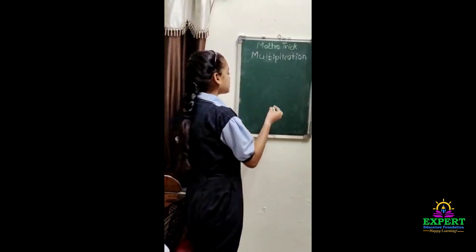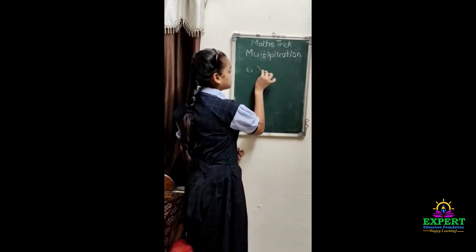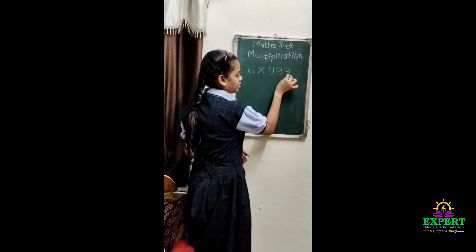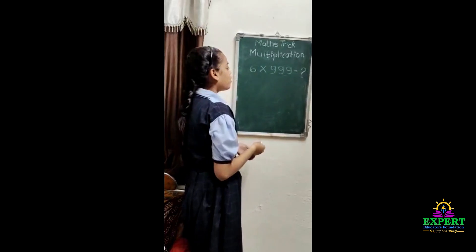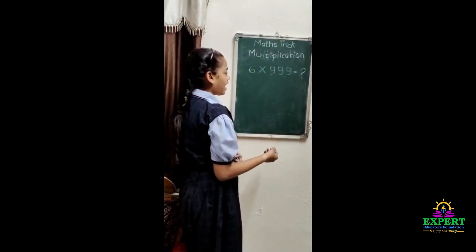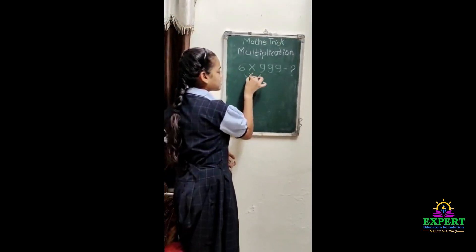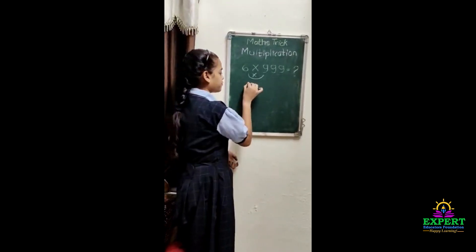So now I will share multiplying a one-digit number with a three-digit number. So let's take a random question: 6 into 999. So we don't know the answer. To find the answer, first we have to multiply 6 into 9, that is nothing but 54.